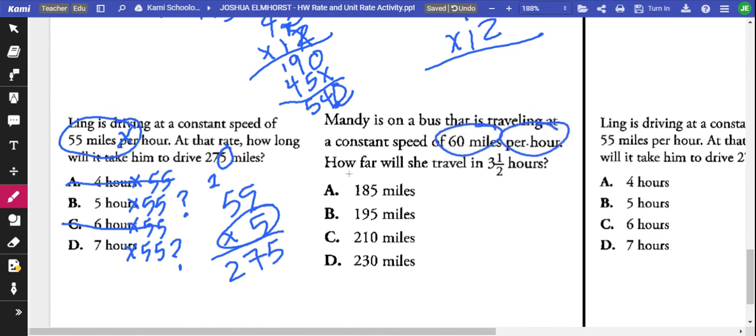And so the last one here, 60 miles per hour. How far was she in two and a half hours? Per hour. So you got 60 times 3.5.